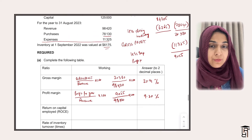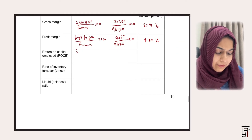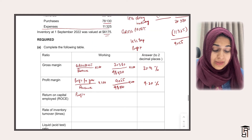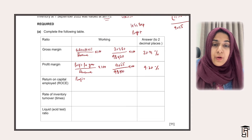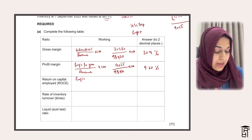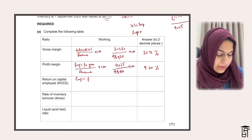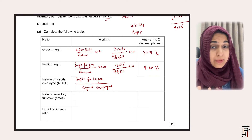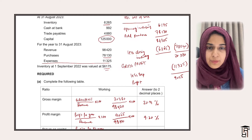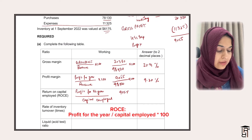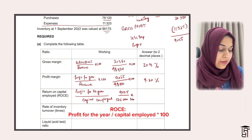Then they ask for return on capital employed. The formula uses profit before interest in the numerator, but there is no bank loan or interest expense here, so profit for the year is used as-is. Capital employed is capital invested by the owner plus non-current liabilities — but there are no non-current liabilities here, so it's just capital of 125,000. So: 9,055 divided by 125,000 multiplied by 100 gives 7.24%.